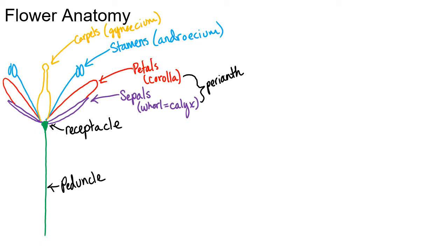The position of these whorls is all important because stamens might be petal-like, carpels might look petal-like, and petals and sepals can often look identical. Sometimes one whorl is missing. You define something as a sepal because it's the outermost whorl, not because it's small and green — just as we defined branches versus leaves by their position.